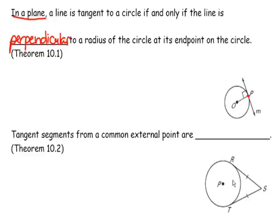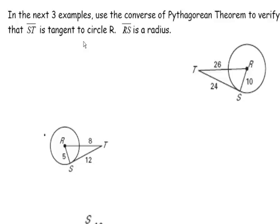If two tangents come from a common external point, then they are congruent. Because a tangent must be perpendicular to a radius, a right triangle is formed. To verify, we check using Pythagorean triples — this is a 5-12-13 right triangle, confirming it's perpendicular, so ST is tangent.